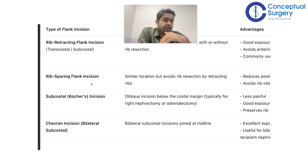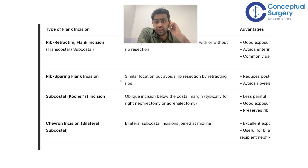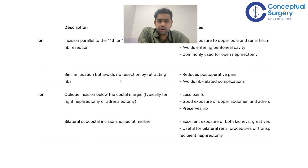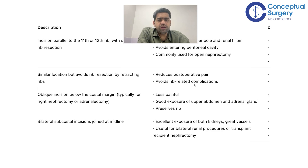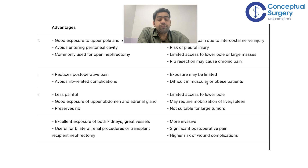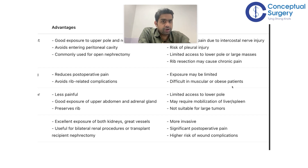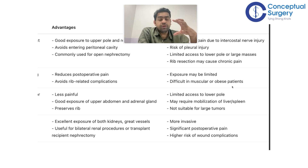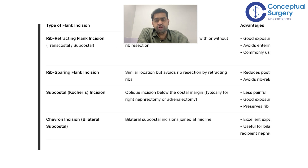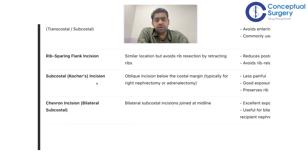The rib-sparing flank incision is given just parallel to and below the 12th rib, similar location but avoids rib resection by retracting the rib. It gives decent exposure — less than the rib-cutting incision — but reduces post-operative pain and avoids related complications. However, exposure may be limited and it is difficult in muscular or obese patients. In such cases, you may need to consider the rib-cutting incision instead.